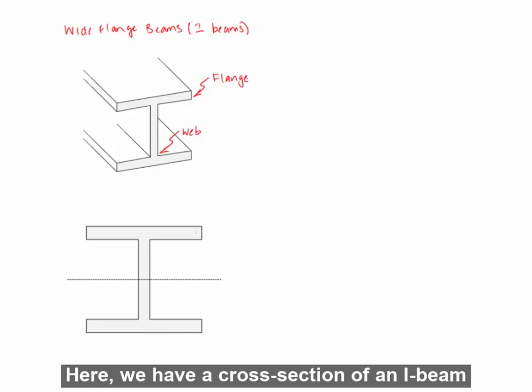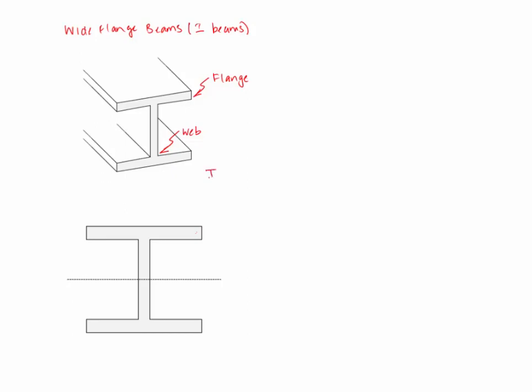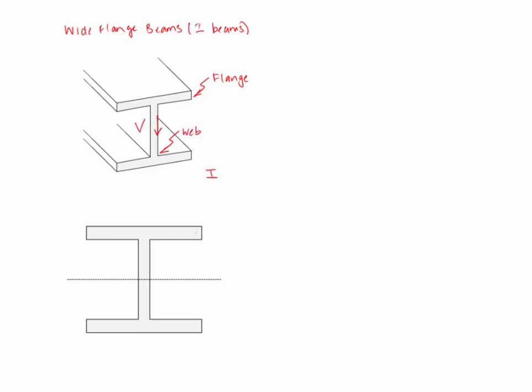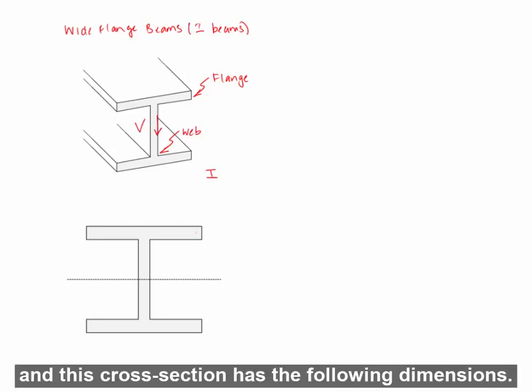Here we have a cross section of an I-beam with a moment of inertia of I, and subjected to internal shear force of V.